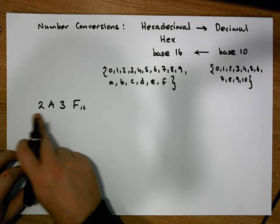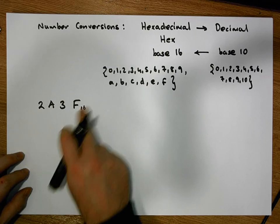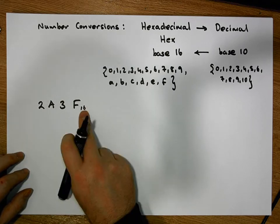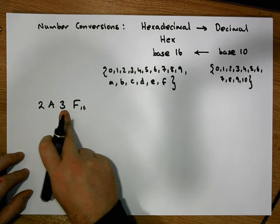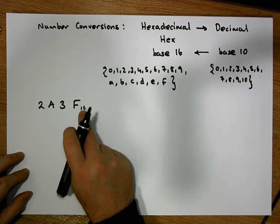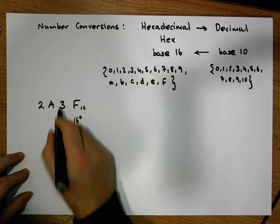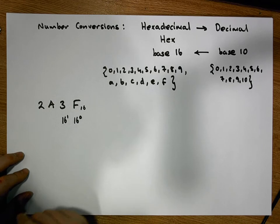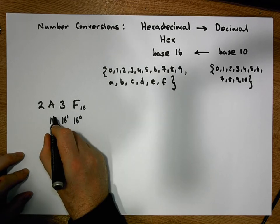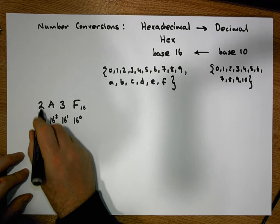Let's remember that this number is taken from a positional number system. It's in base 16, so each digit represents how many multiples of certain powers of 16 we have. The F represents how many 16 to the 0s, the 3 is 16 to the 1s, the A is how many 16 squareds, and the 2 represents how many 16 cubes.